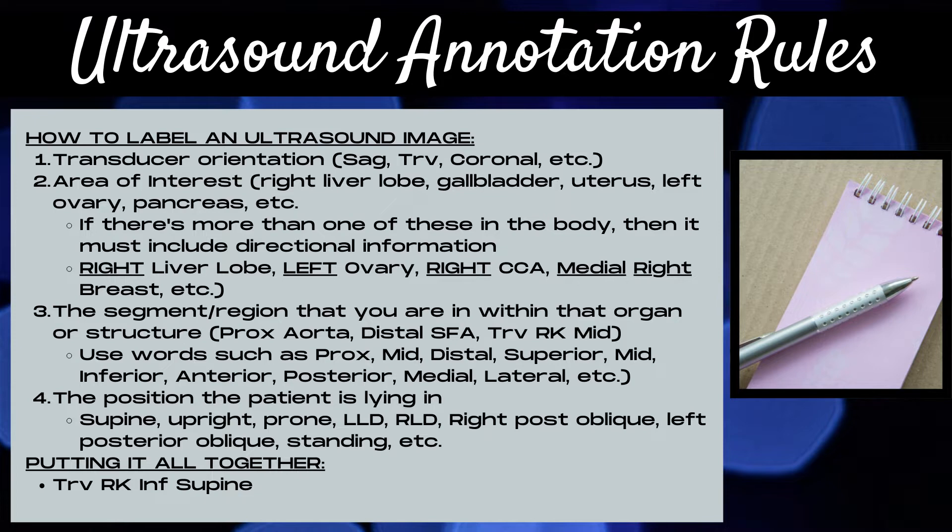There are four things that you'll want to include on your ultrasound image. The first thing is the transducer orientation. Are you taking sagittal, transverse, or coronal slices through the body?